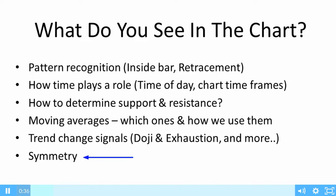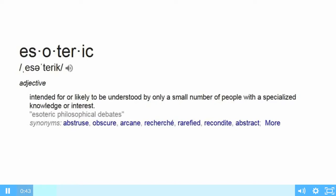Market symmetry is certainly one of the more esoteric items we're going to discuss in this course. The word esoteric is completely apropos — intended for or likely to be understood by only a small number of people with a specialized knowledge or interest. Not only does market symmetry fall into the esoteric category, but frankly this entire course does. The advantage is that you are absolutely gaining an edge because a lot of the things you're learning here are just not known by many traders, many investors, pros and amateurs alike.